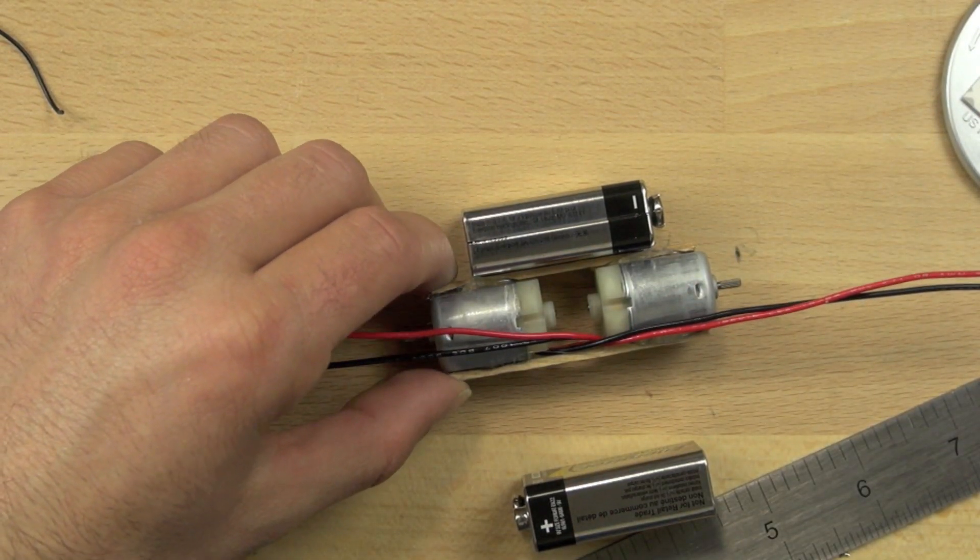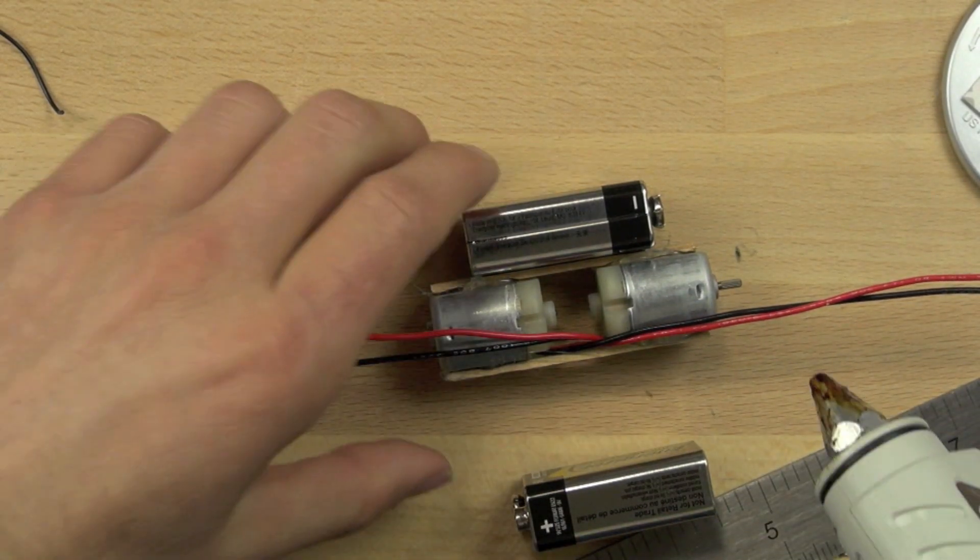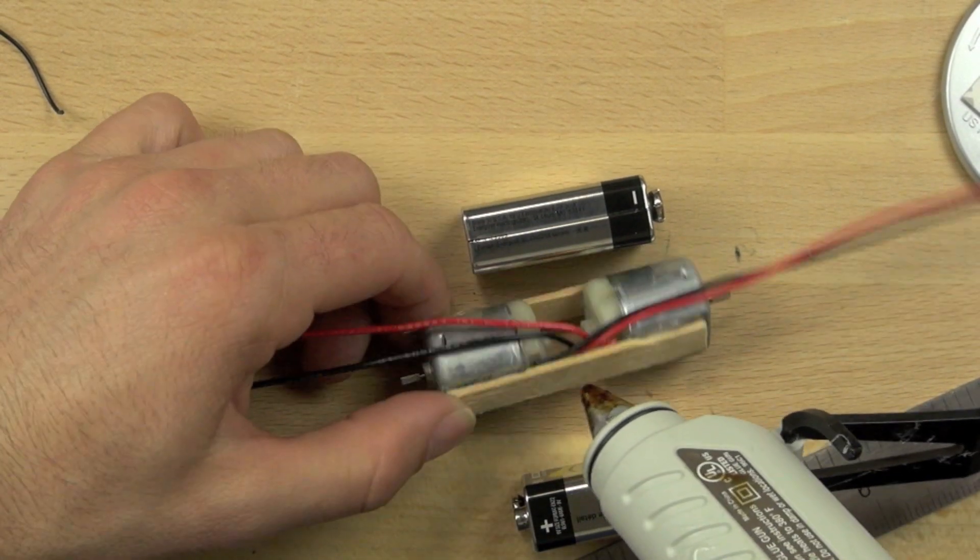This is going to mean that it's really important that those motors were lined up, right? Because if they're not, they won't sit flat and your wheels won't be true when you turn your bot on.